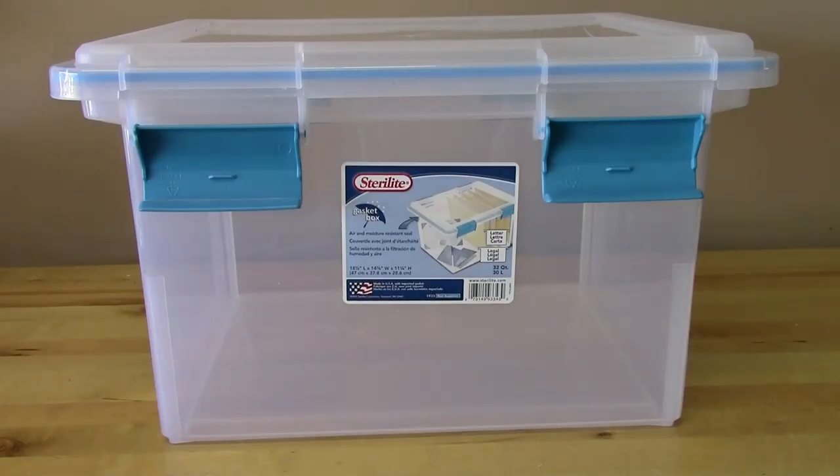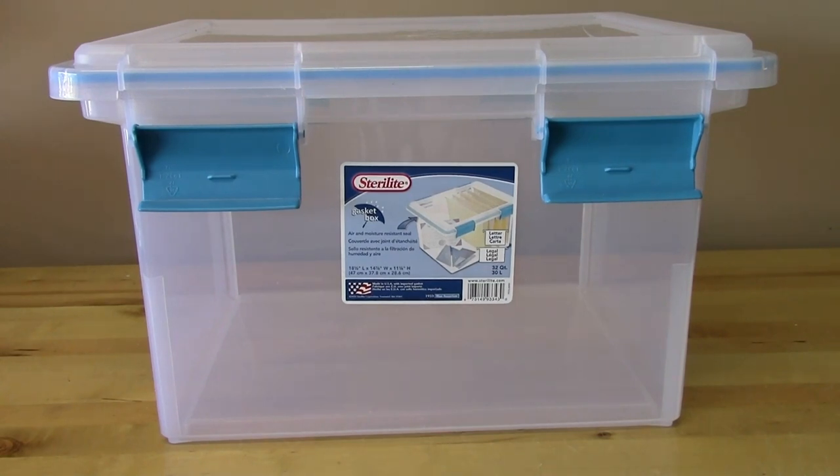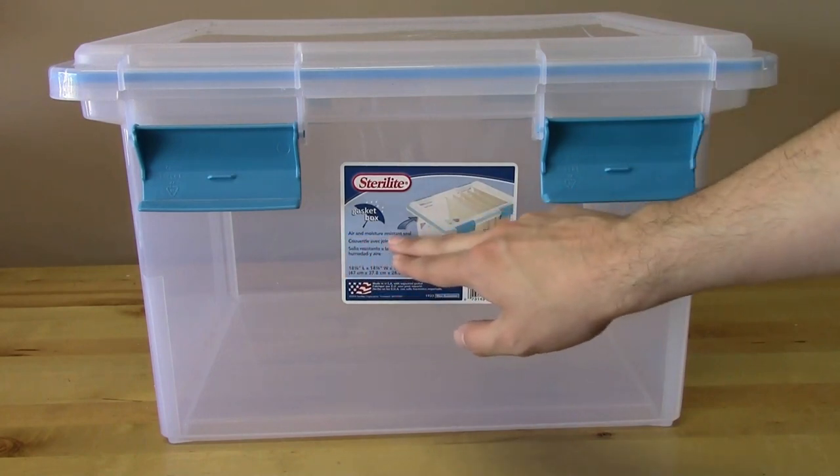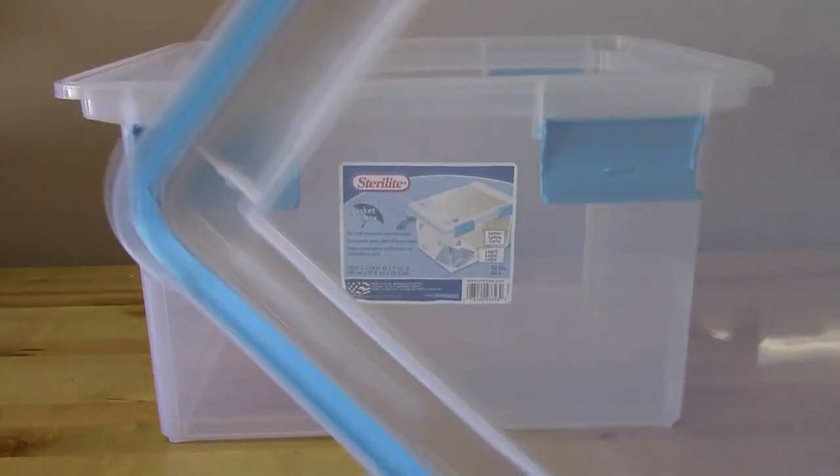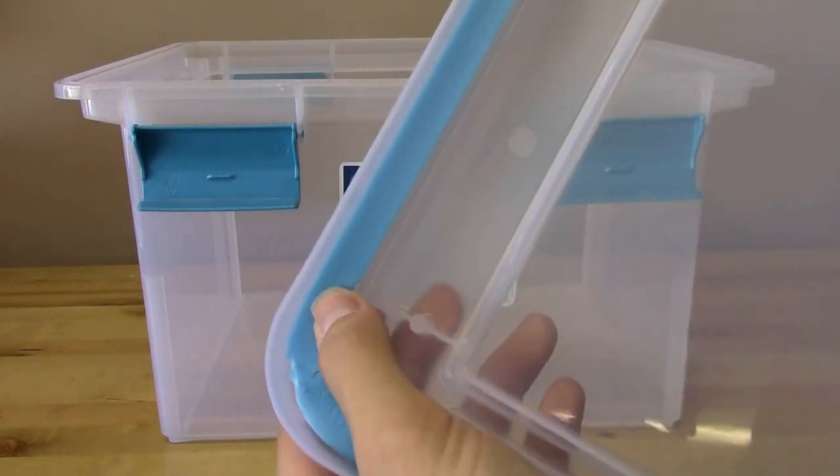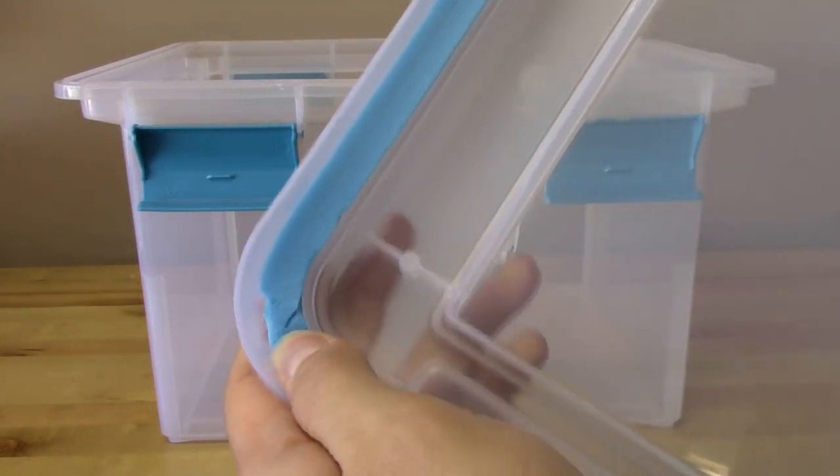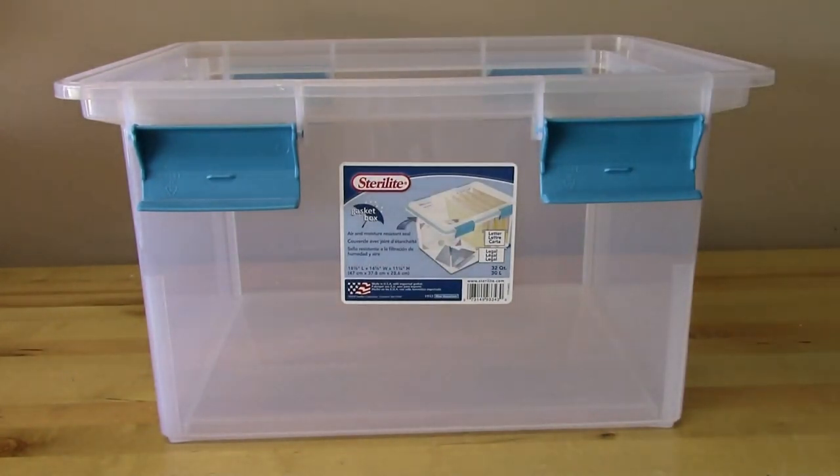Now the first component of the glove box will of course be the box. So I just bought a plastic container, really any container will work, just whatever size you need. I like this particular box because it's got this air and moisture resistant seal. If we take the lid off and take a look, it's got this foam liner around the inside here and that's going to help to seal the box completely.